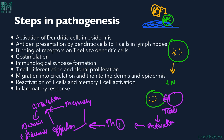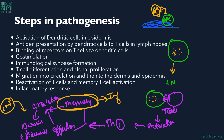On second exposure to the antigen, there are already memory T-cells present in the epidermis. These memory T-cells get activated very quickly, producing a rapid response. They then produce certain inflammatory cytokines, which cause the lesions of psoriasis - that is how a psoriasis lesion is formed.